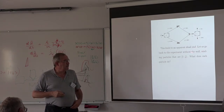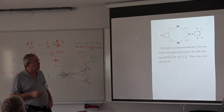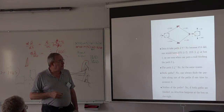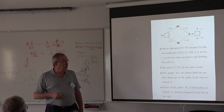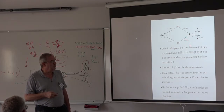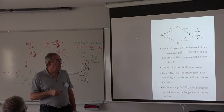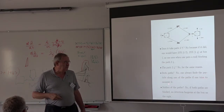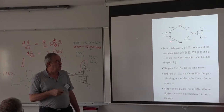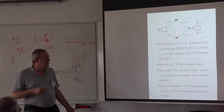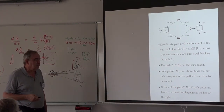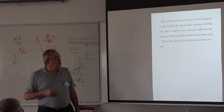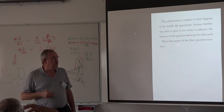This is an apparent dead end. If you go to the experiment without a wall, you get 100% one-down. Does the particle take path two-up? No, because if it did, you would have 25% at box one, as you see when you put a wall blocking path two-down. Both paths? No, because you always find the particle on one of the paths if you try to measure it. This phenomenon is similar to double slit: whether one path is open or not seems to influence the behavior of the particle following the other path.